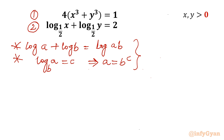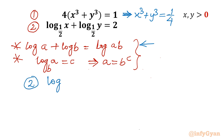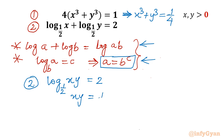From equation 1, dividing both sides by 4, I can write x cube plus y cube equal to 1 by 4. For equation 2, using property 1, I can write it as log xy base half equal to 2. Now applying property 2, xy equal to half power 2, so xy equal to 1 by 4.